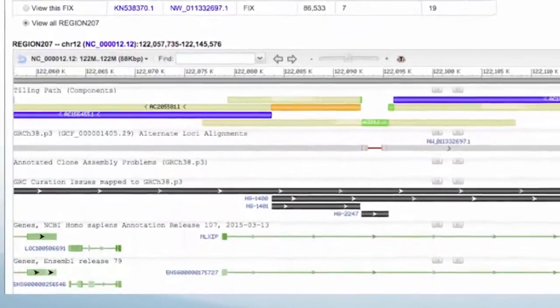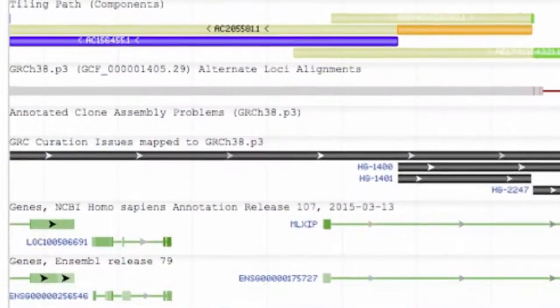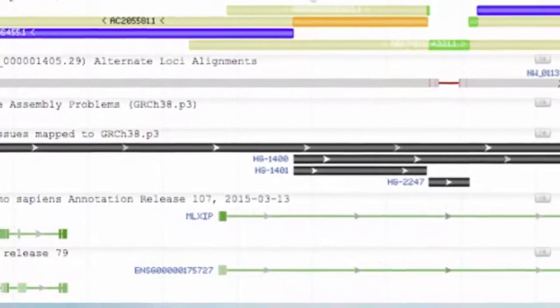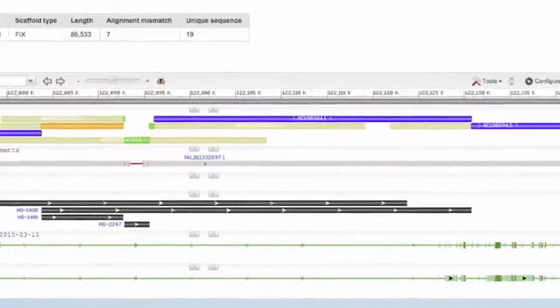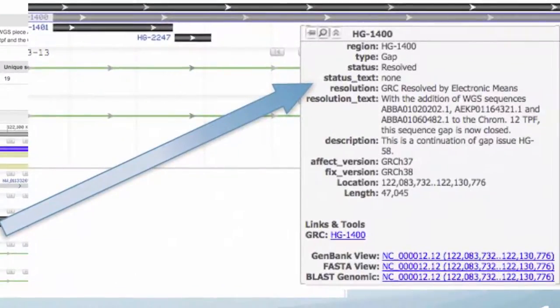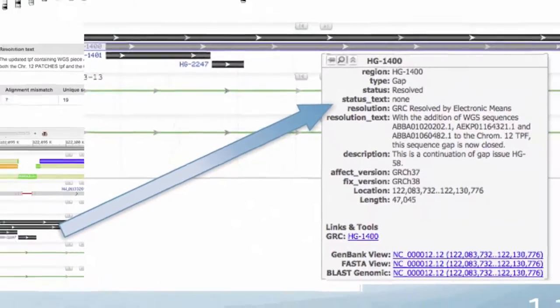As you can see, there are some areas with information on the curation of regions. And if you click on one of them or just hover the mouse over the region, the information on these agreements between sequences will be displayed.